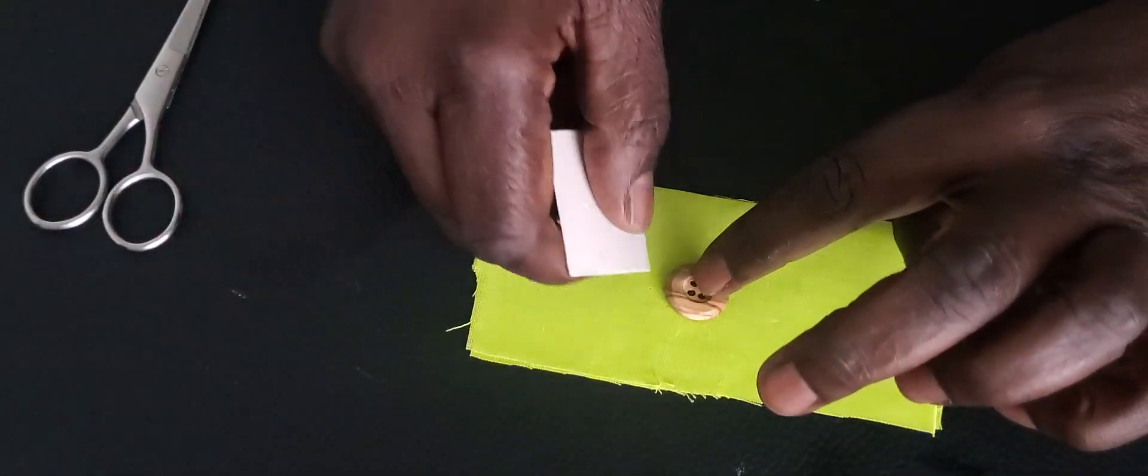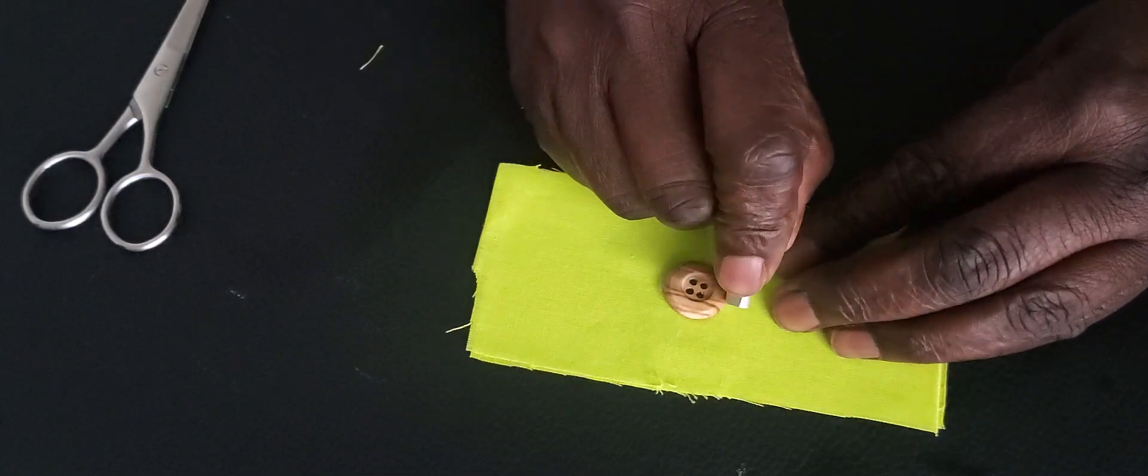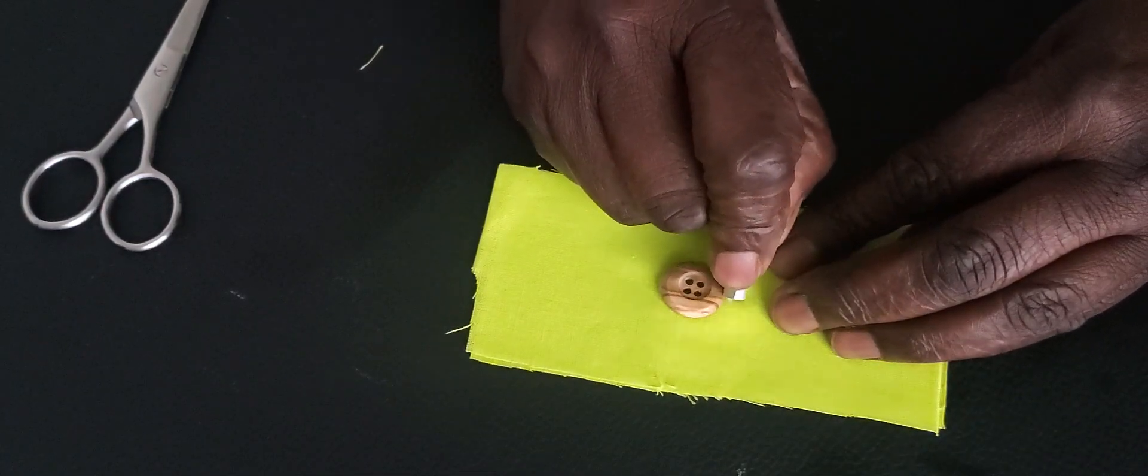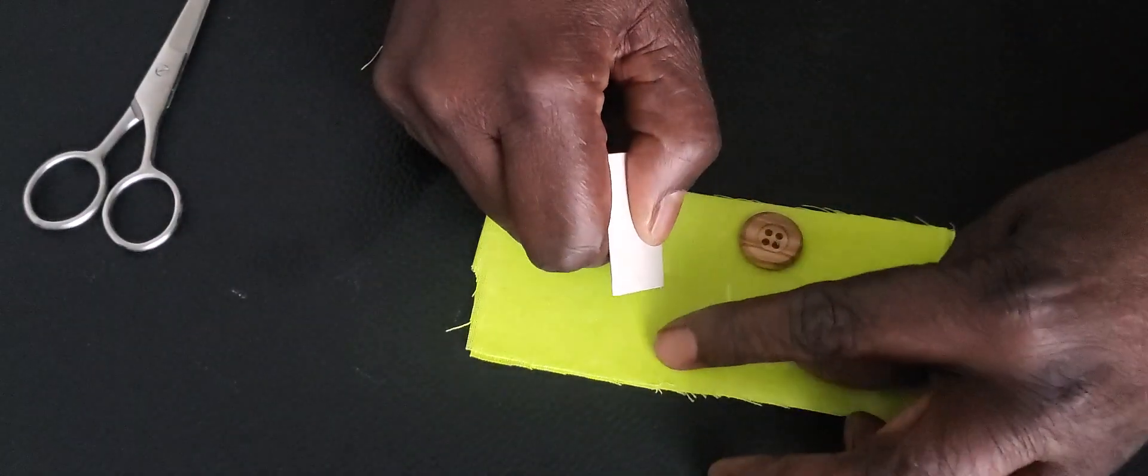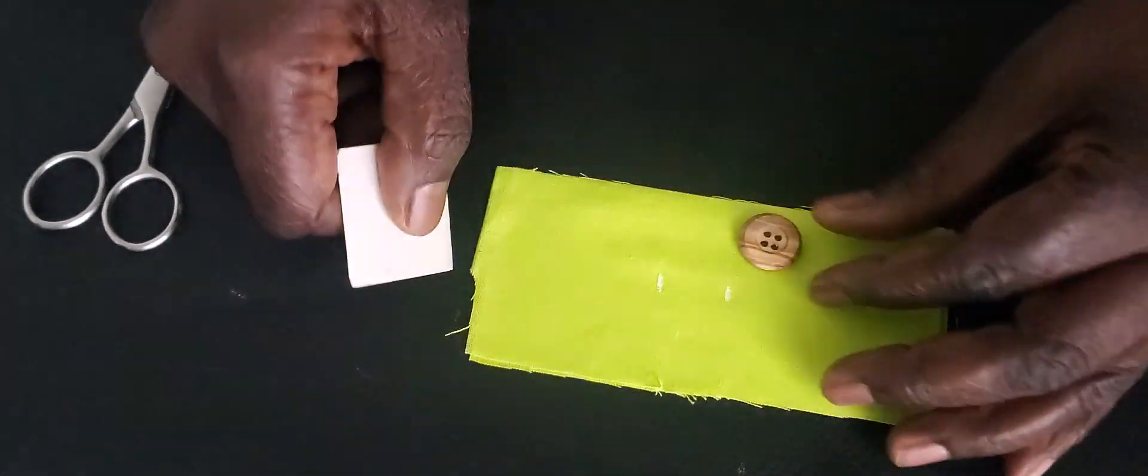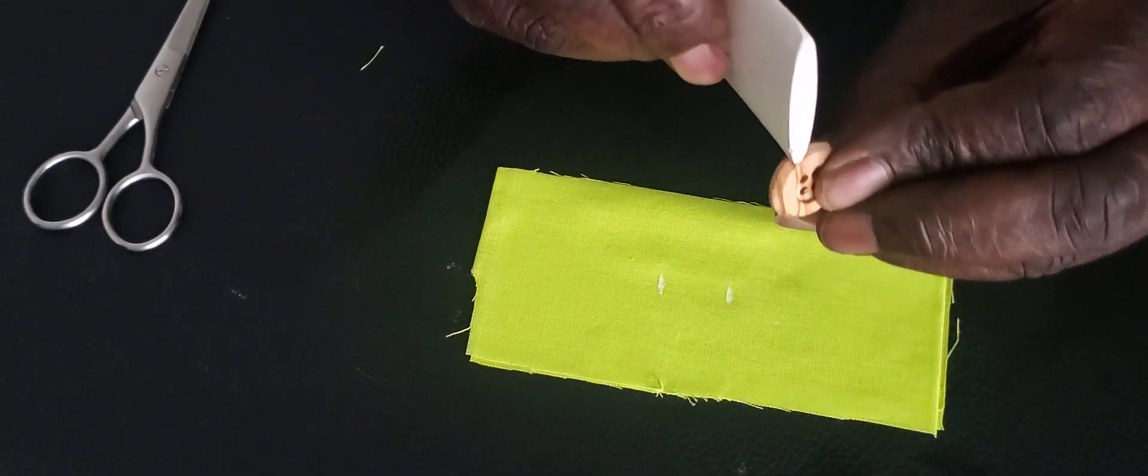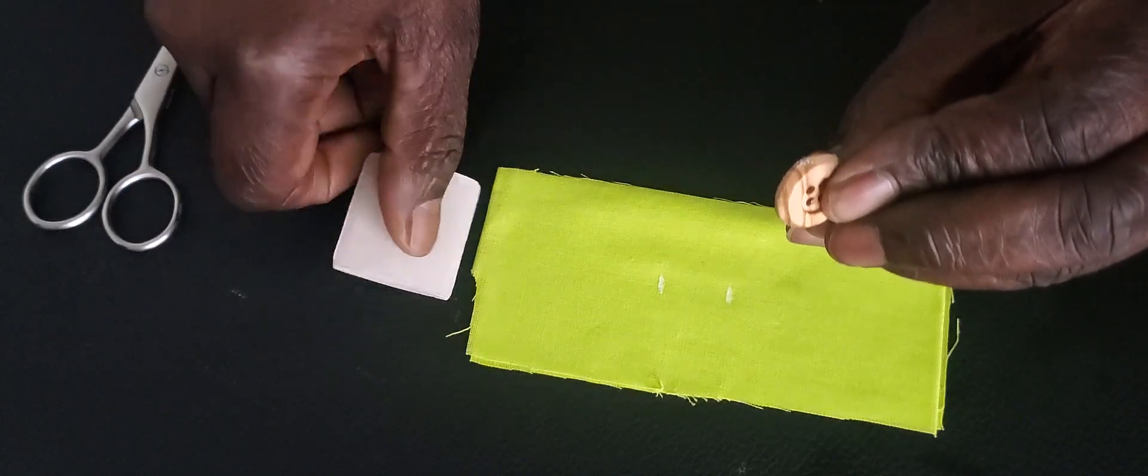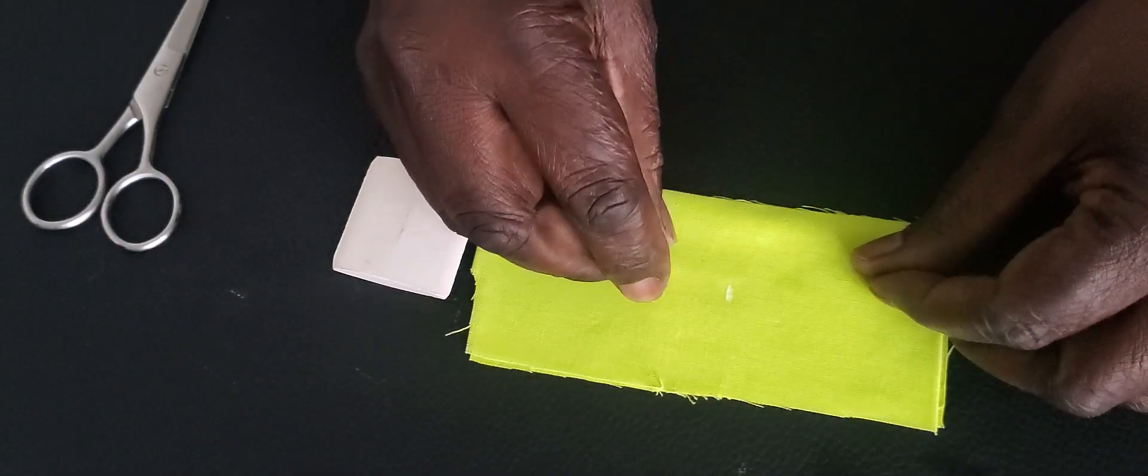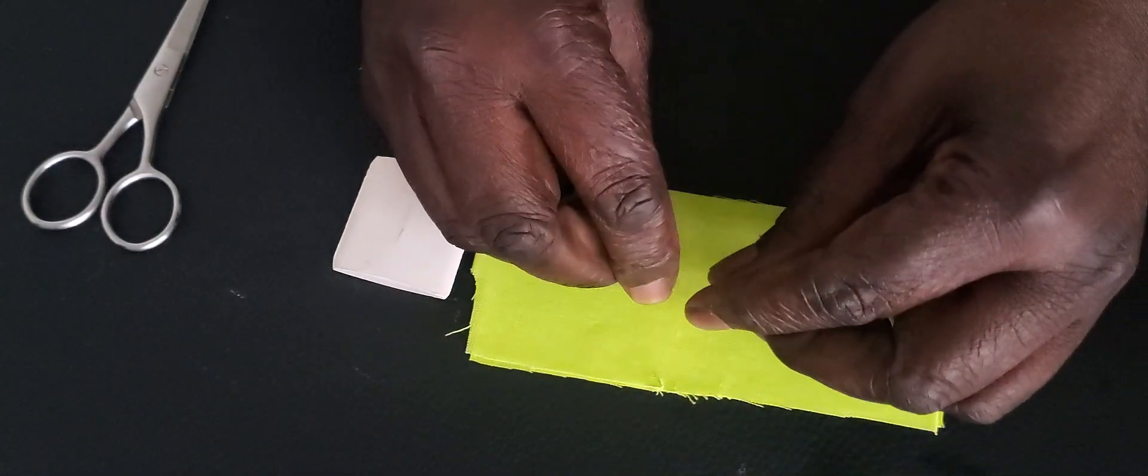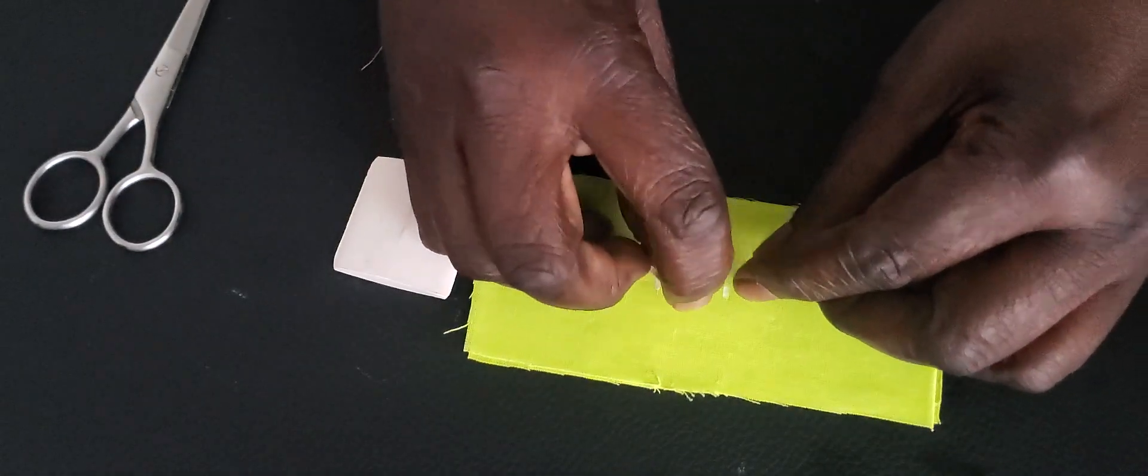Then you mark, making sure you mark neatly. Then you add the edge of the button so that it will not be too tight. So you're going to add the edge of your button.